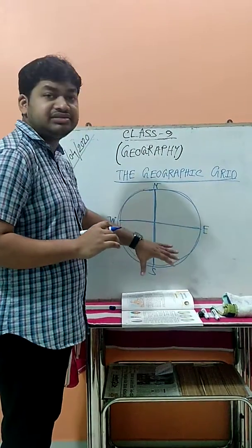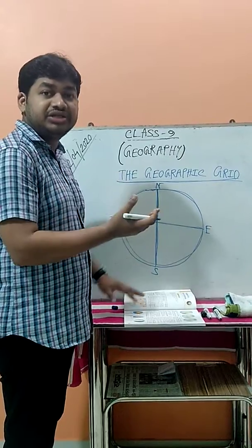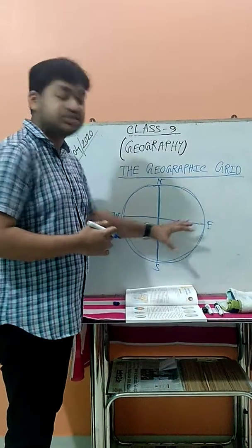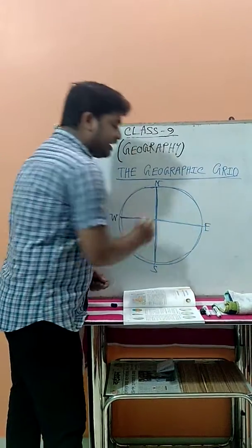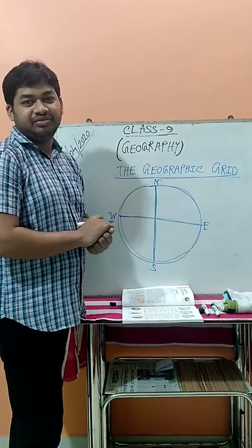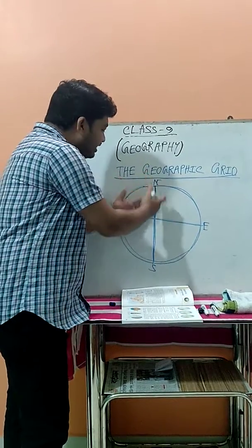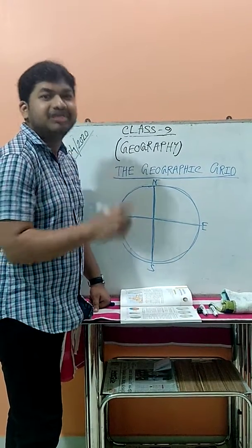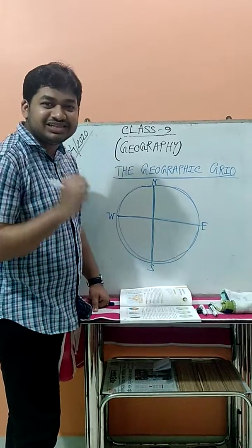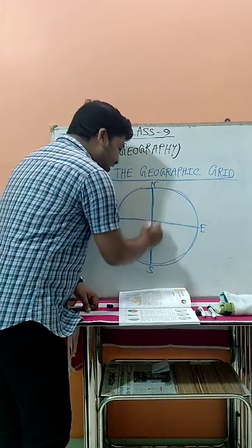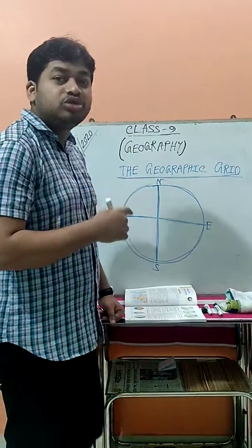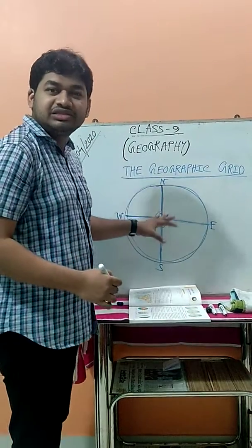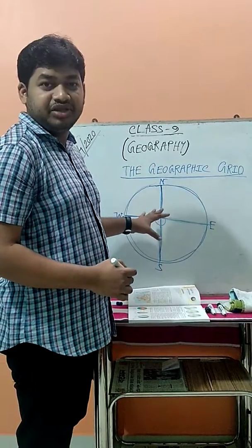In the Earth, two lines pass through it — one vertical line and one horizontal line. These vertical lines are known as longitudinal lines. And which one is the horizontal line? That is the east-west direction line, called the latitudinal line. Now when a vertical and a horizontal line intersect with each other, they form the grid system.